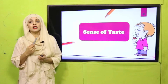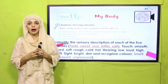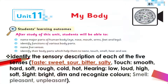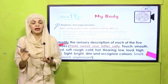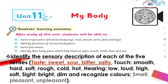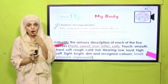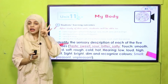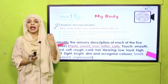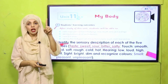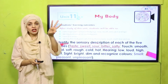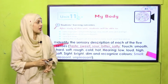Now let's look at the student learning outcome, given on page number 81, for parents and teachers. By the end of today's lesson, all students will be able to identify the sensory descriptions of taste: sweet, sour, bitter, and salty. Today we will study sense of taste in detail. Quickly repeat after me: salty, sweet, bitter, and sour. Very good.